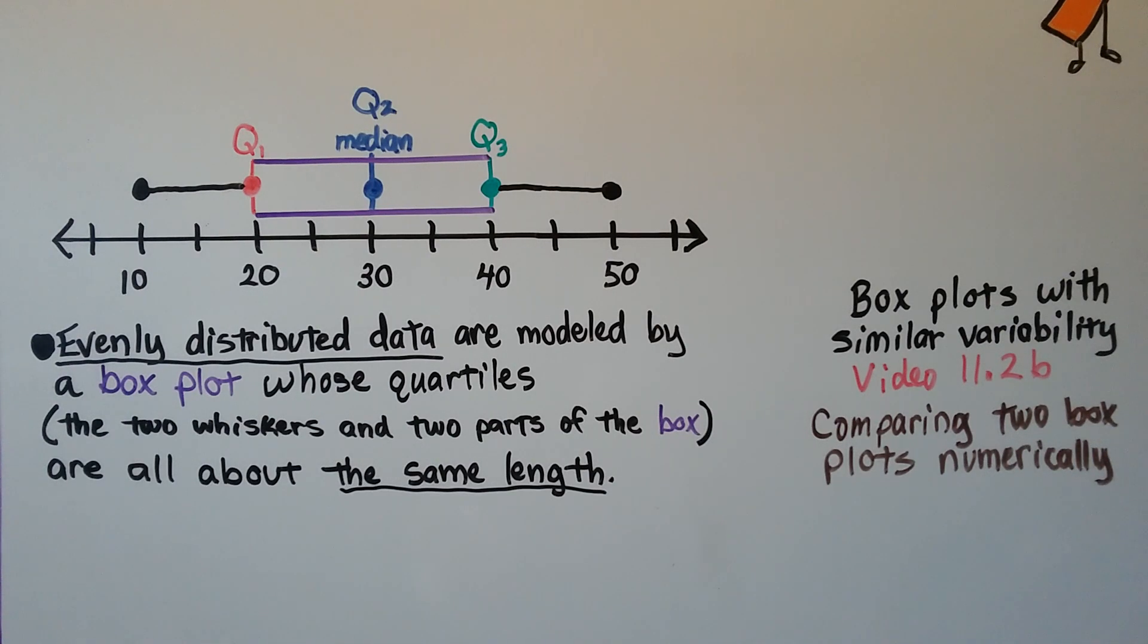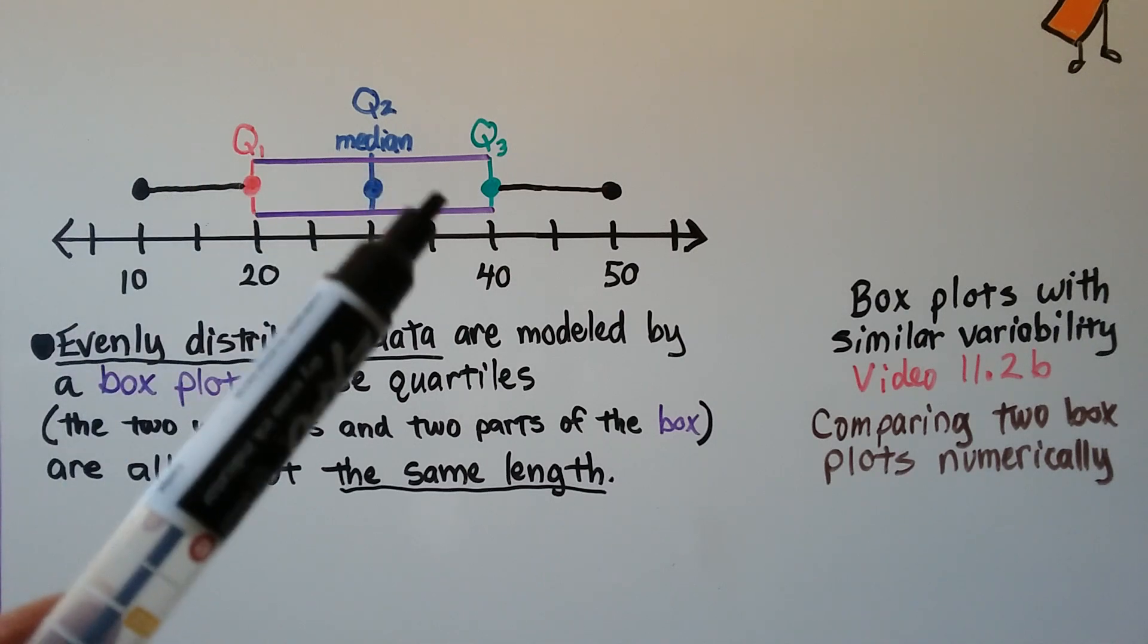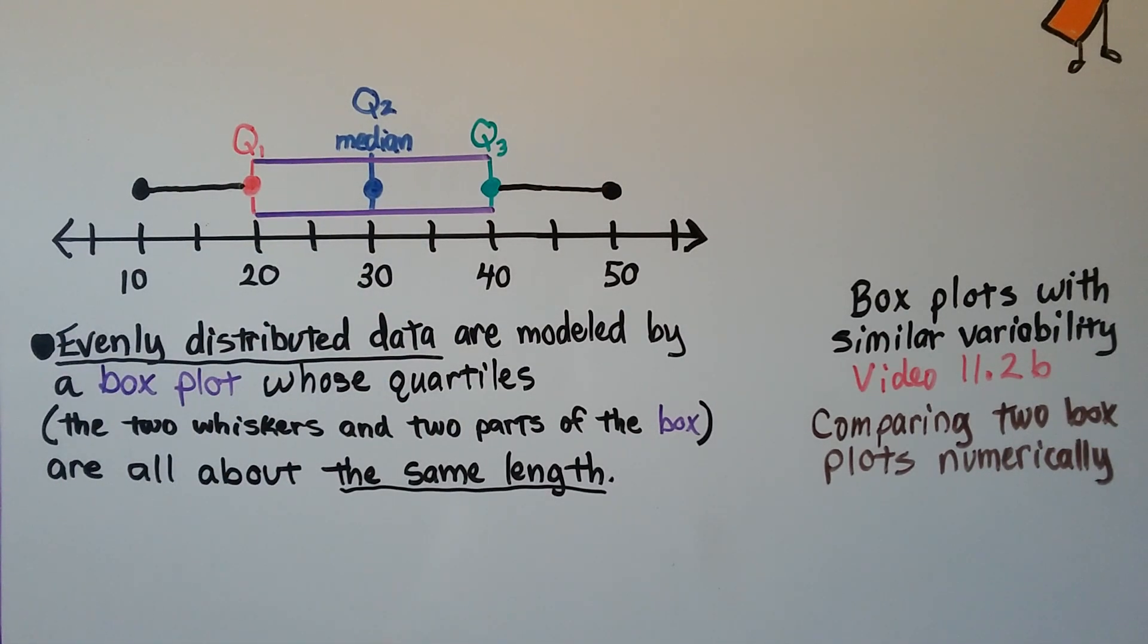Evenly distributed data are modeled by a box plot whose quartiles, you know, the two whiskers and the two parts of the box, they're all about the same length. So these are all about the same length. So this data is evenly distributed.